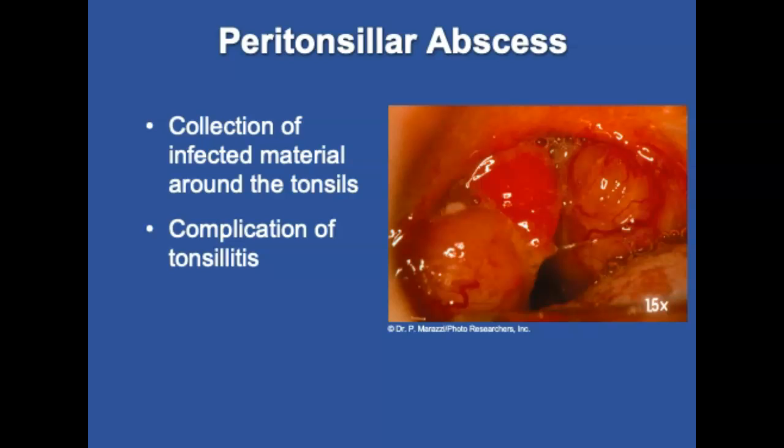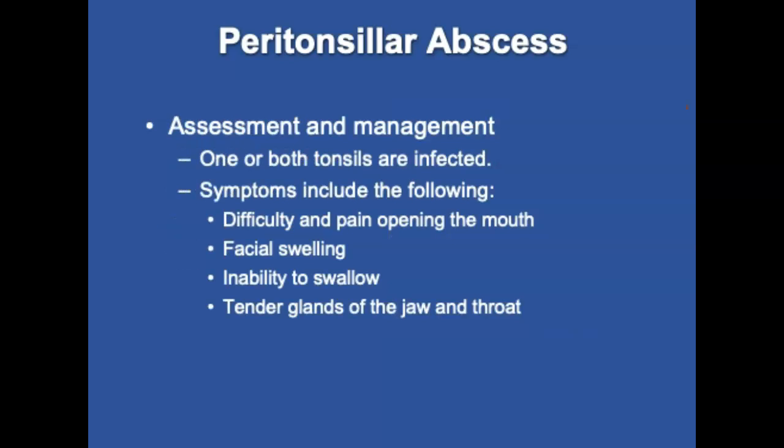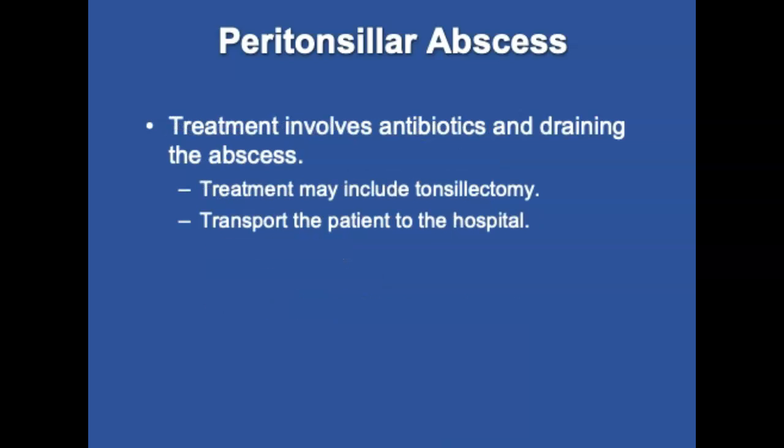A peritonsillar abscess is a collection of infected material around the tonsils and is a complication of tonsillitis. One or both tonsils may be infected, and the roof of the mouth, neck, or chest can be affected. Patients present with chills, difficulty opening their mouth, facial swelling, fever, drooling or inability to swallow saliva, headache, muffled voice, sore throat, and tender glands in the jaw and throat. Antibiotics and draining the abscess may be needed. In some cases, this condition may be life-threatening, and hospital transport is warranted.